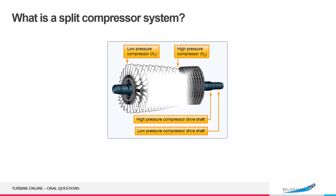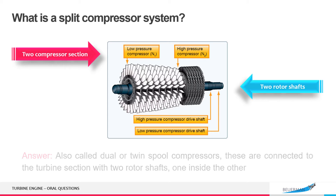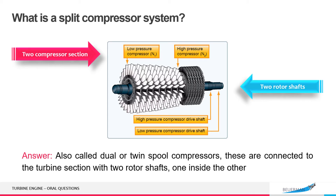What is a split compressor system? Also called dual or twin spool compressors. These are connected to the turbine section with two rotor shafts, one inside the other.